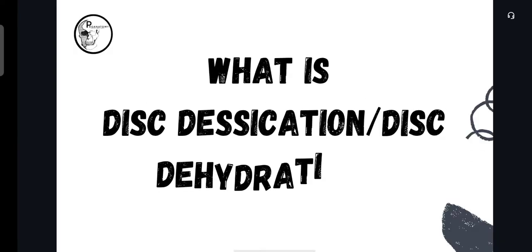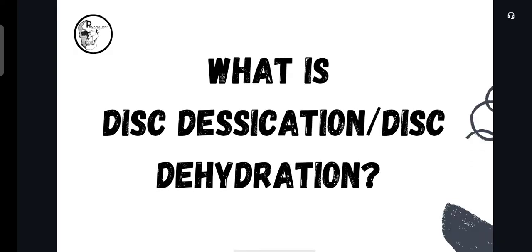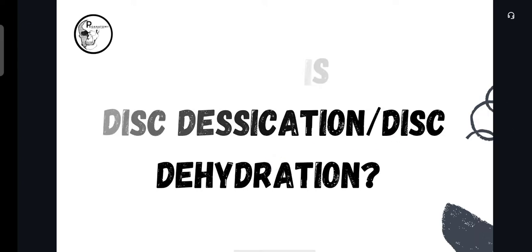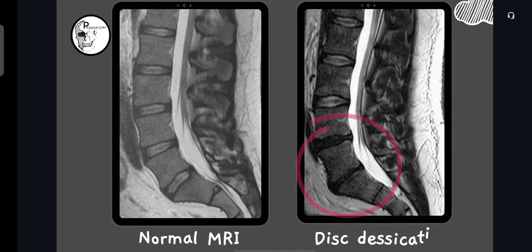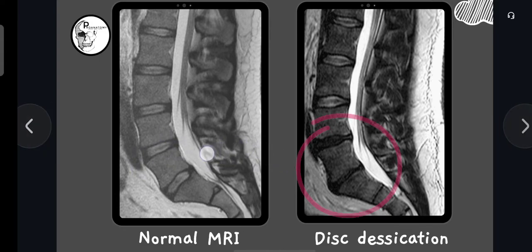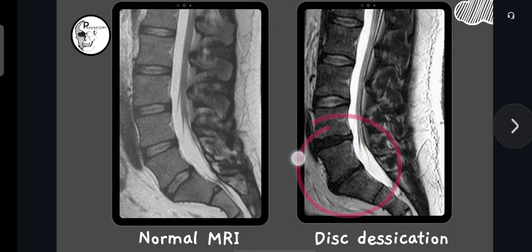This is the actual disc desiccation or disc dehydration. Here you can see the normal intervertebral discs and on the other hand you can see the dehydrated disc — this is the reason for disc desiccation, where the intervertebral disc gets dehydrated and becomes fragile.